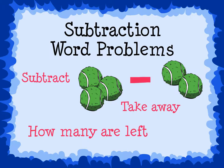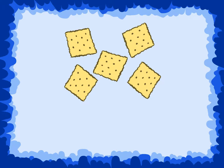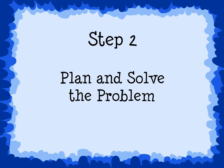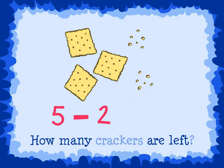We will use the same three steps to solve subtraction word problems. Step 1: Read and understand the problem. Sam had five crackers. He ate two of the crackers. How many crackers are left? Step 2: Plan and solve the problem. We see the words 'how many are left,' so we know that we need to subtract. The numbers 5 and 2 from the problem are the numbers that we need to subtract. We will write a number sentence like this: 5 minus 2.